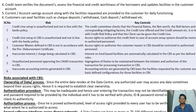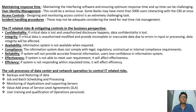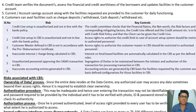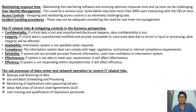The eight risks associated with CBS are: ownership of data or processes, authentication procedure, authorization procedure, several software interfaces across diverse networks, maintaining response time, user identity management and access control, and incident handling procedure.